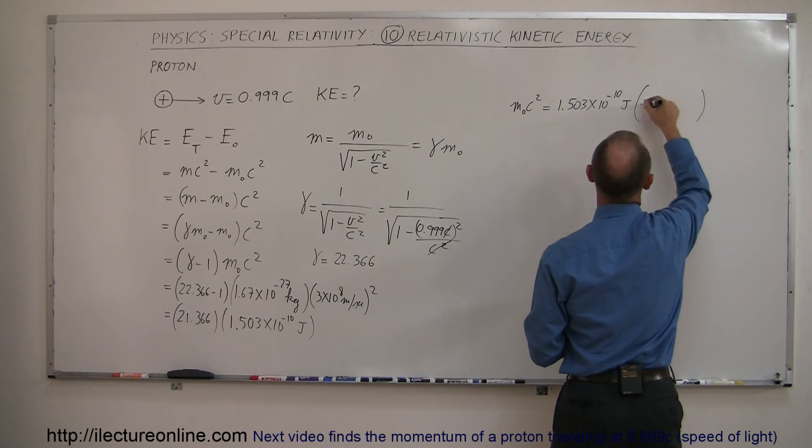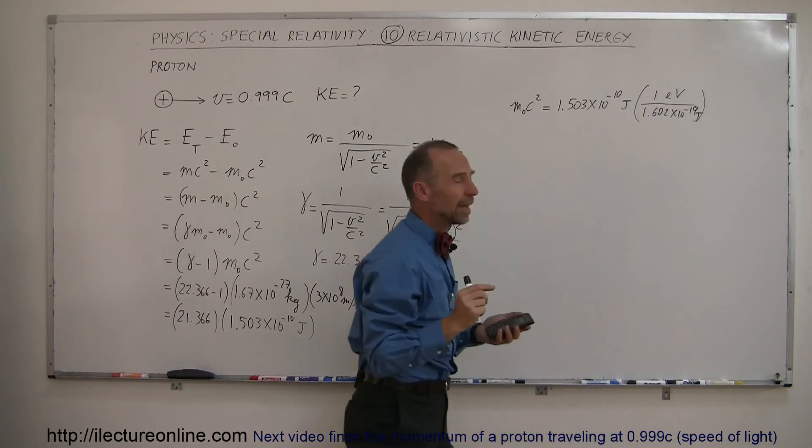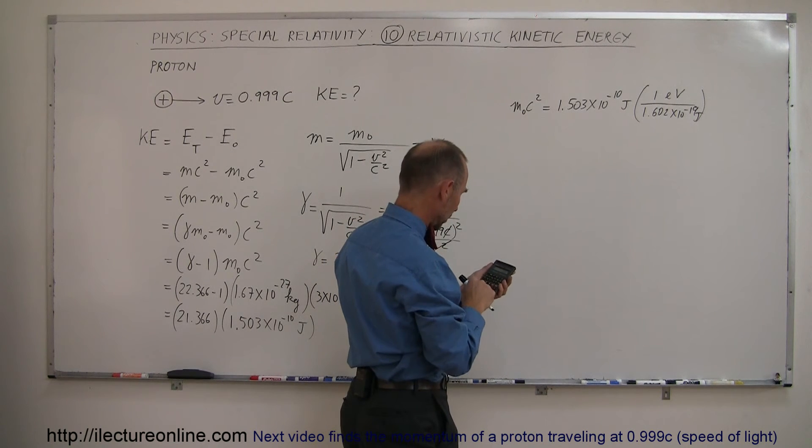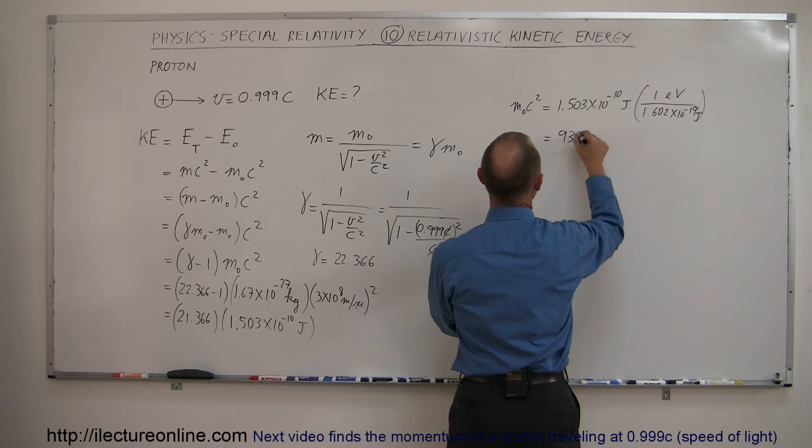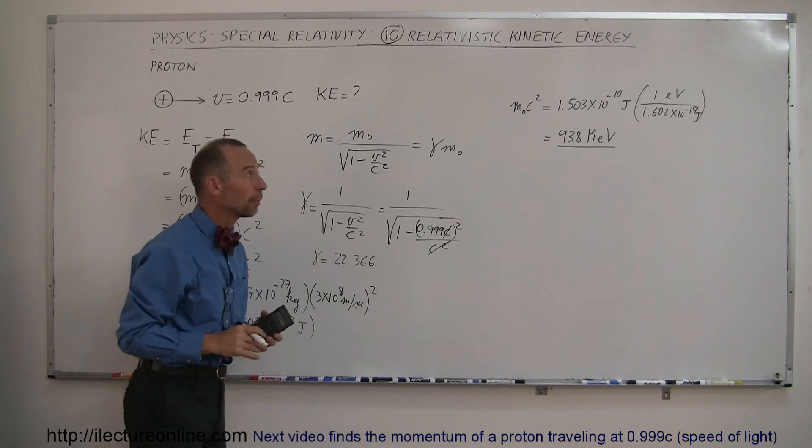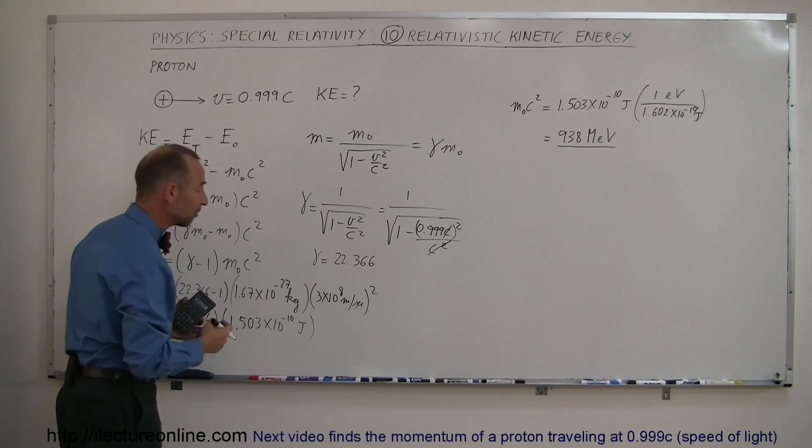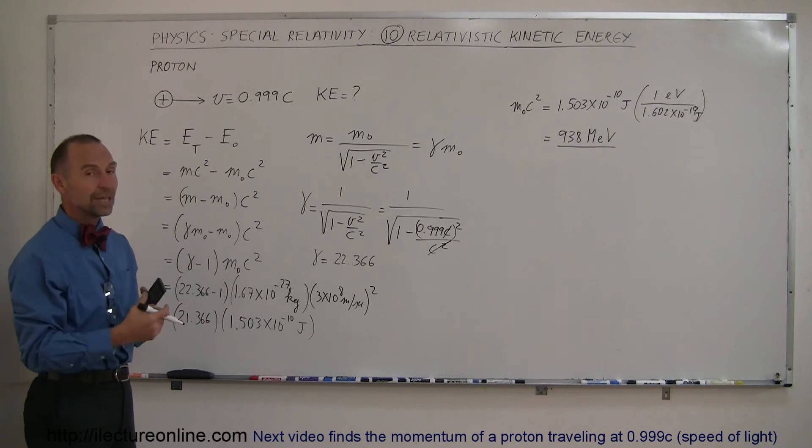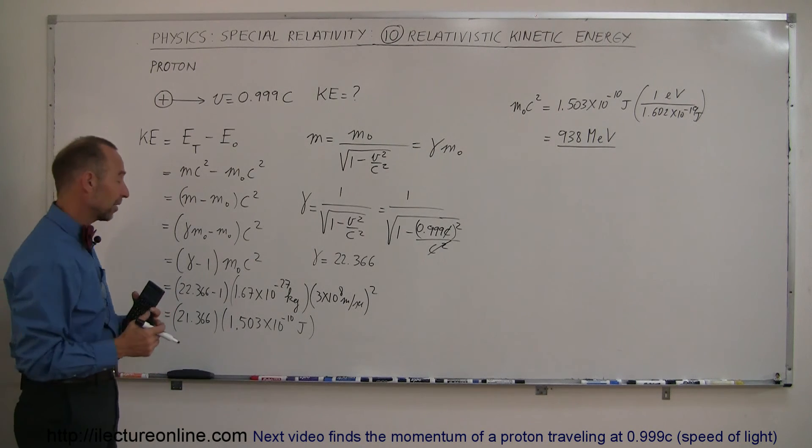And if I now multiply this times 1 electron volt per 1.602 times 10 to the minus 19 joules, we can convert that amount into electron volts. So divide that by 1.602e to the 19 minus, and that gives us 938 million, or MEVs. So quite often, the rest mass energy of small atomic particles is expressed in terms of million electron volts. In this case, for a proton, if you take a proton and completely convert energy, you get 938 million electron volts worth of energy out of that, which is equivalent to 1.503 times 10 to the minus 10 joules.